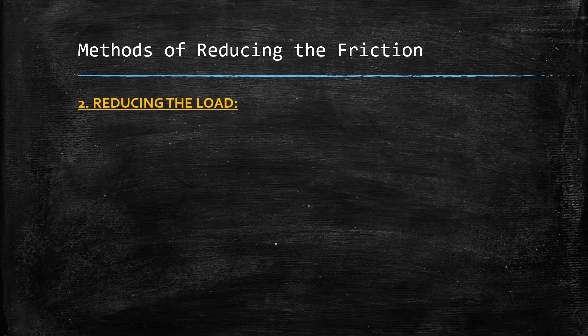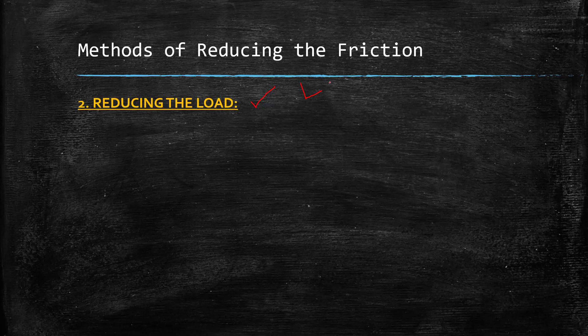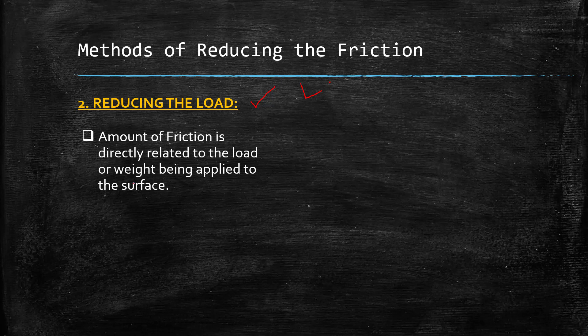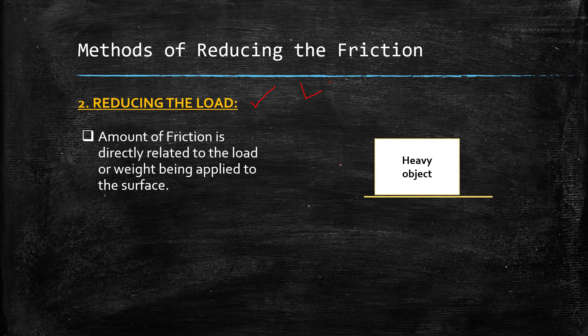The second method is reducing the load. As we discussed, the amount of friction is directly related to the load or weight being applied to the surface. For example, if we have a heavy object and we apply force to move it, more force is required to overcome the friction. Because friction is also a force, a heavier object requires more force to move.